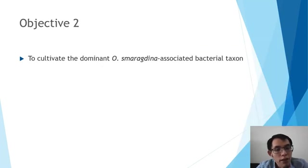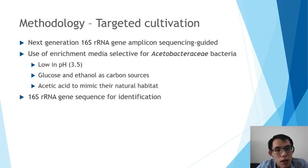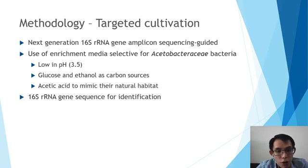We then moved on to the second objective, which was to cultivate the dominant weaver ant-associated bacterial taxon. Targeted cultivation guided by results from the 16S rRNA gene amplicon sequencing was then performed. I used a variety of enrichment media selected for Acetobacteraceae, and found that only enrichment media low in pH down to 3.5, containing glucose and ethanol as carbon sources,